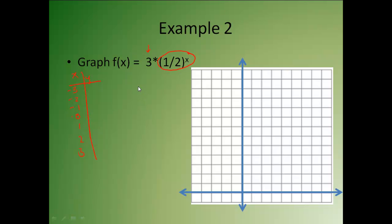When I plug those in, when I put negative 3 in here, I get 24. When I put negative 2 in, I get 12. Negative 1 gives me 6. 0 gives me 3. 1 gives me 1.5. 2 gives me 0.75. And 3 gives me 0.375.